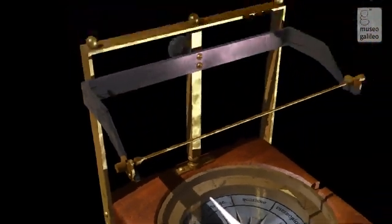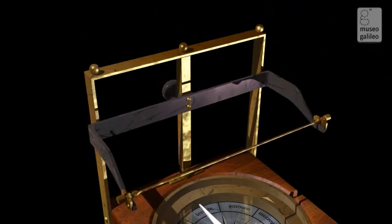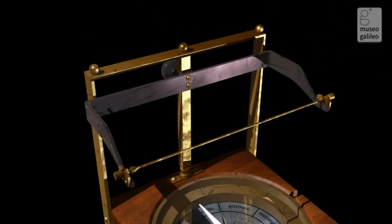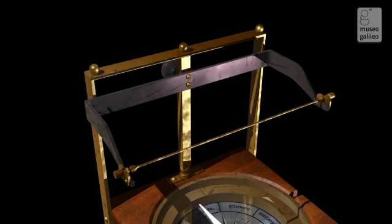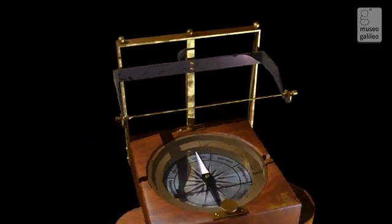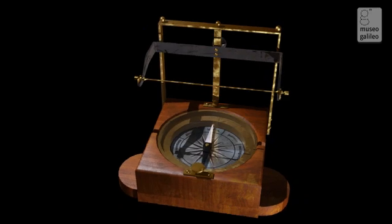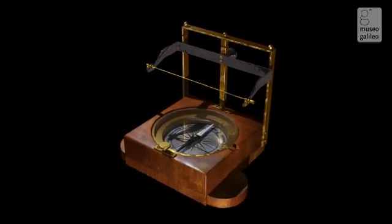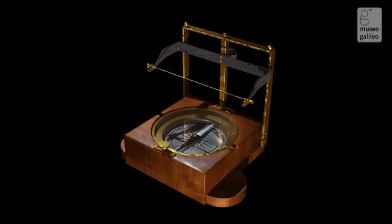A pinion is used to raise and lower the wire above the compass needle to determine the relationship between its deflection and its distance from the wire, through which an electric current flows. Three levelling screws ensure that the system is perfectly horizontal.